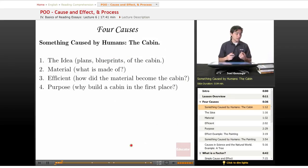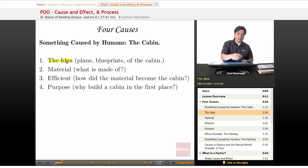The first way to think about the cause is that there was an idea that caused this cabin. So somebody thought about, well, we need some plans, we need some blueprints, and we need a kind of outline for the cabin. And we're going to plan it out and structure it before we start building it. Now, of course, blueprints don't just magically become a cabin.